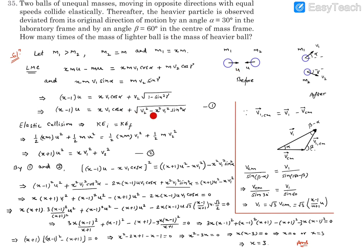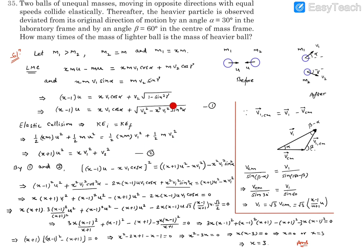Since the collision is elastic, the coefficient of restitution is one, or equivalently, initial and final kinetic energy must be equal. Writing the kinetic energy condition: (1/2)*m1*u² + (1/2)*m2*u² = (1/2)*m1*v1² + (1/2)*m2*v2². After substituting m1 = xm and m2 = m and cancelling (1/2)m, this reduces to: (x + 1)*u² = x*v1² + v2². That's our second relation.